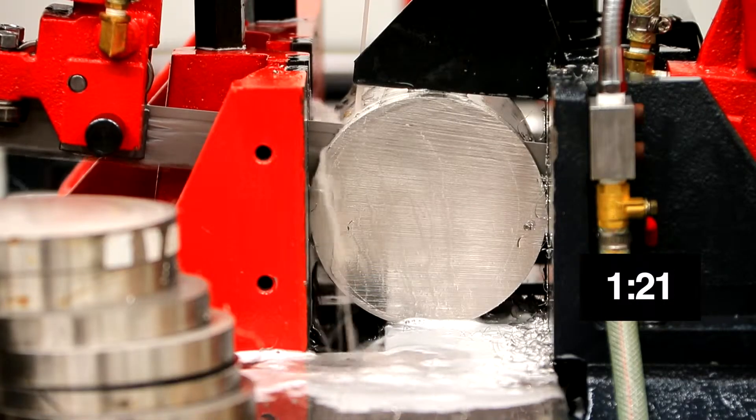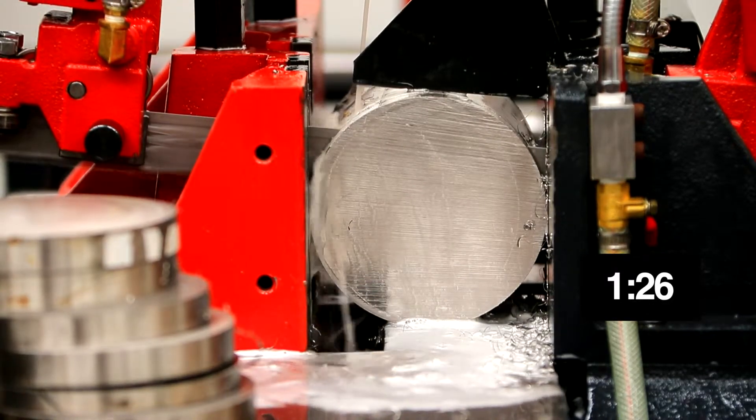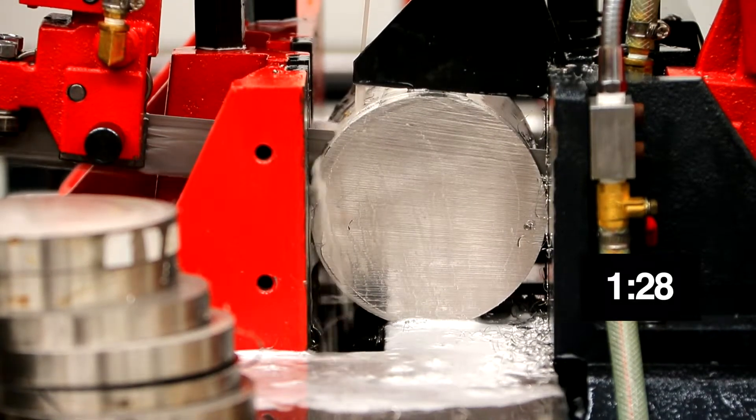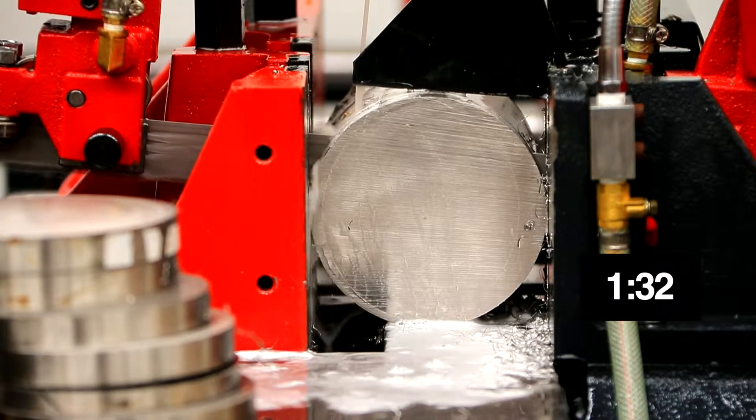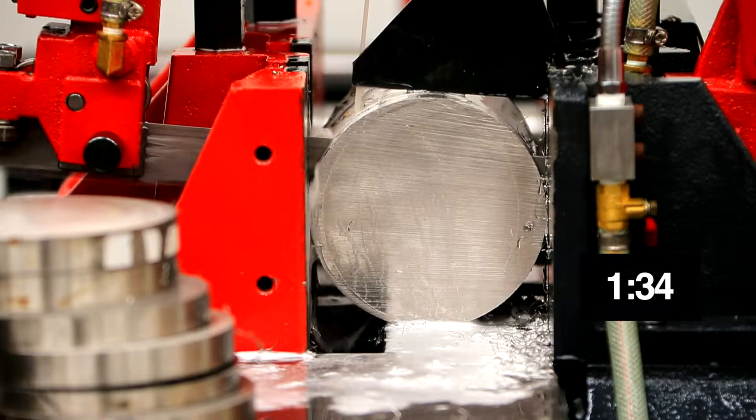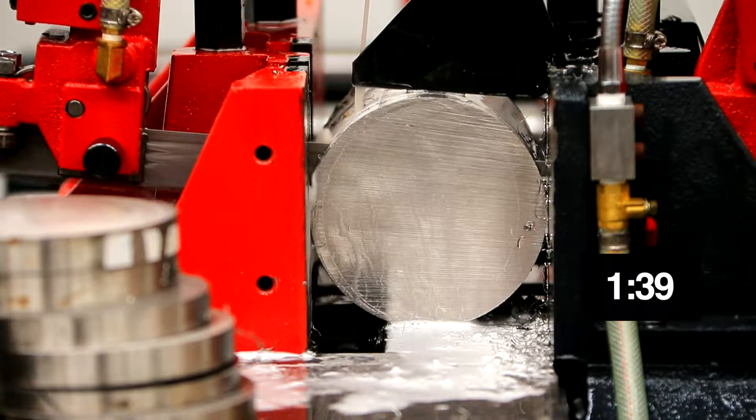If we were using a standard bi-metal bandsaw blade to make this cut on 5.5 inch 304 stainless steel, it would take us about 18 to 22 minutes to make this cut. However, using the Q1002 carbide tip blade, we're going to try and achieve a three and a half minute cut.